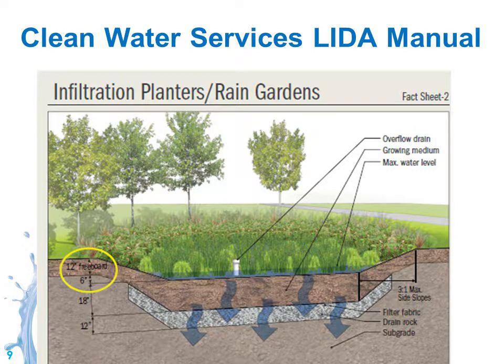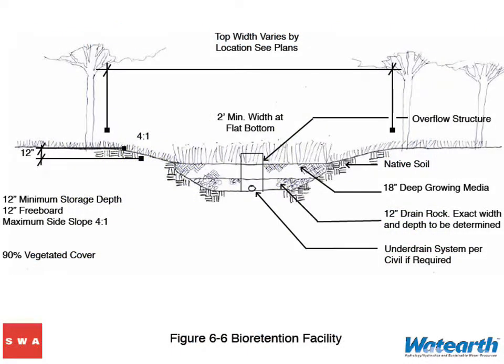Briefly on bioretention: we've got a surface storage layer, a growing media layer, and a drain rock layer. If you have Type C or D clayish soils with low saturated hydraulic conductivity rates or low infiltration, you're going to have an underdrain. When we work with SWMM, we'll be putting all of these components into the model. We can also represent plants within the model using a coefficient, though unless it's very densely planted, we may or may not apply that coefficient.